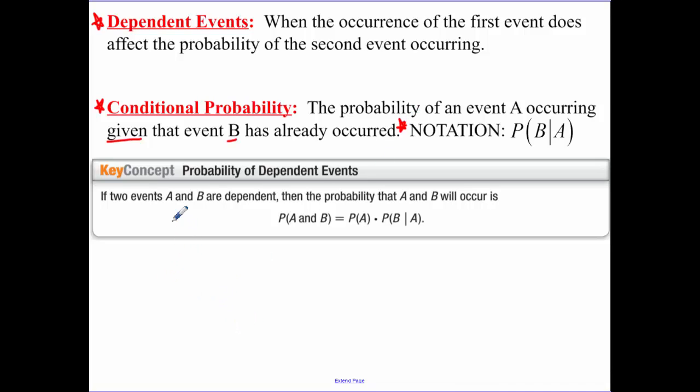Two events A and B are dependent. Then the probability that A and B will occur - you find the probability of A first, the first event, and then you find the probability of B given that event A has occurred.